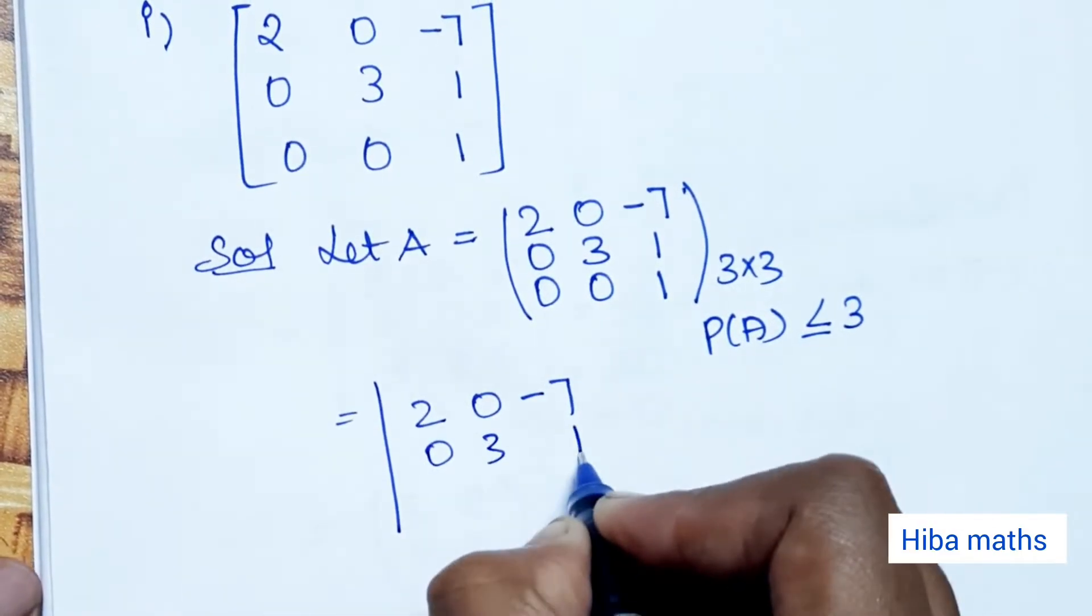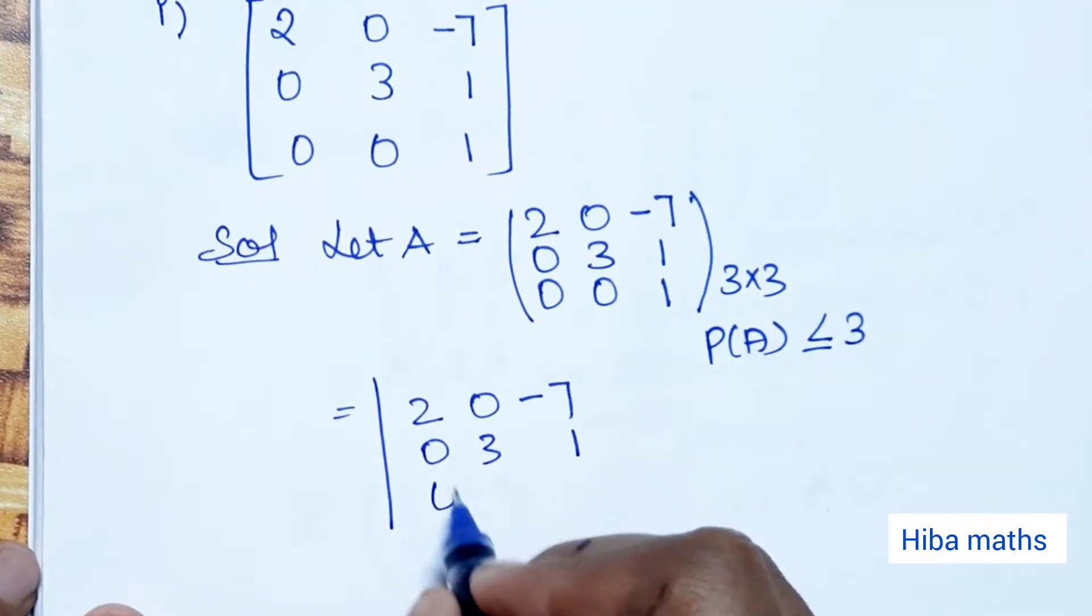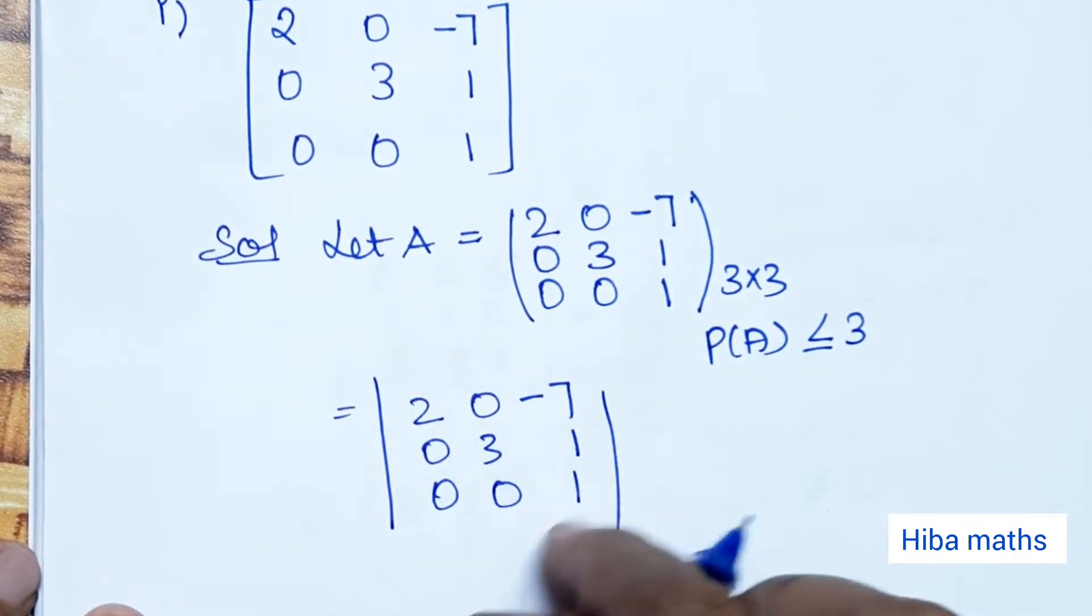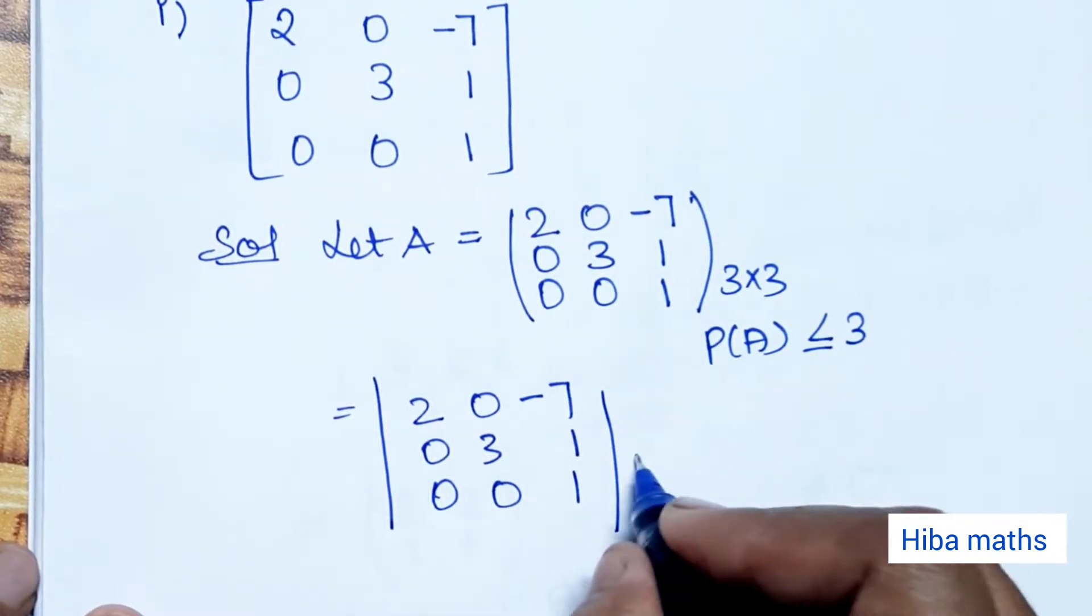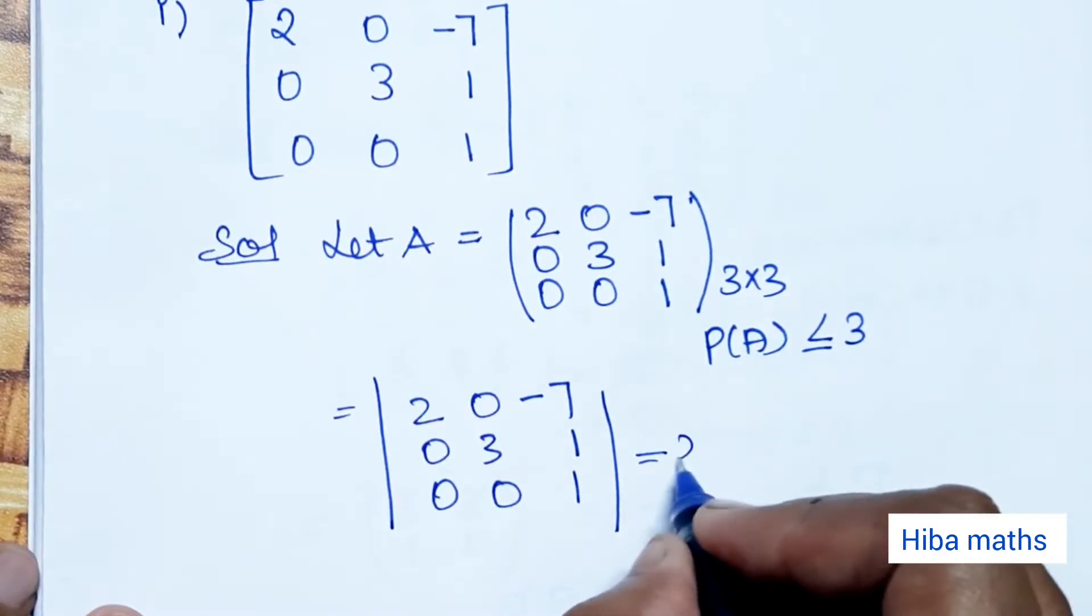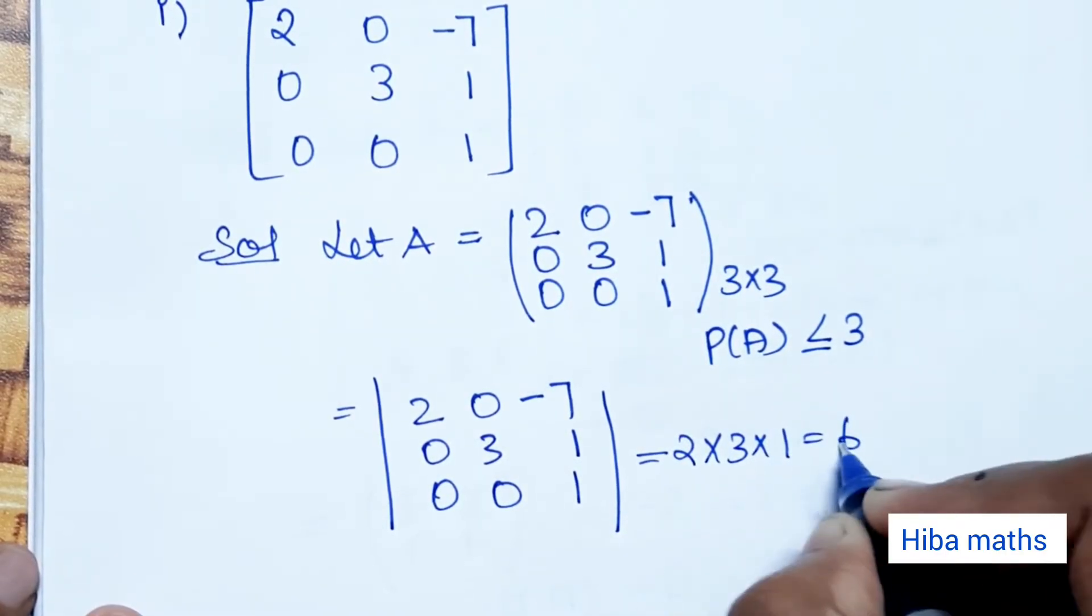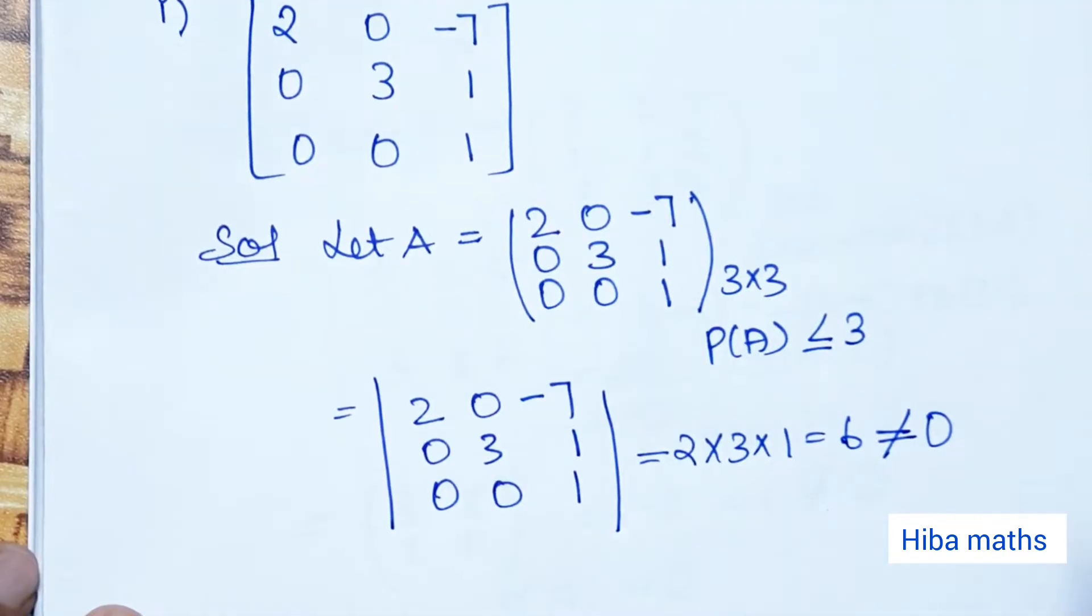For the matrix [2,0,-7; 0,3,1; 0,0,1], the determinant is the product of the diagonal elements: 2 × 3 × 1 = 6, which is not equal to 0. Therefore, the rank of matrix A is 3.